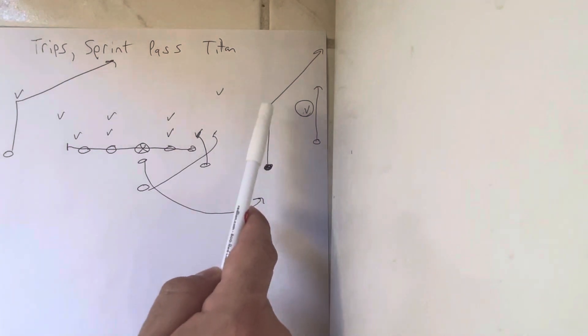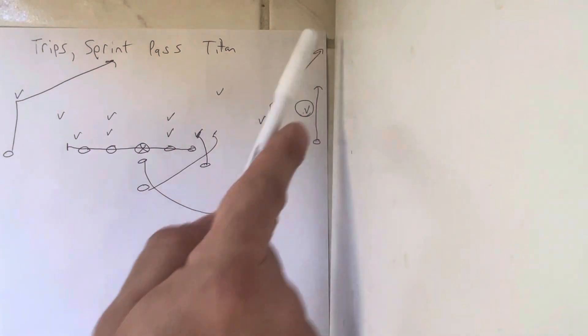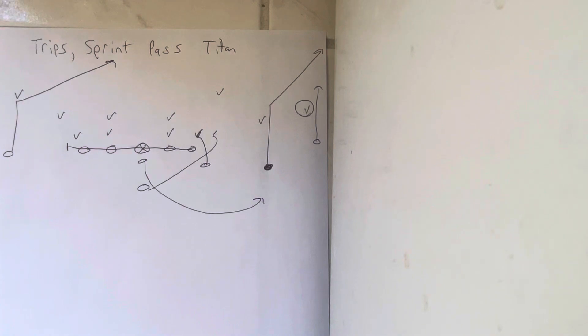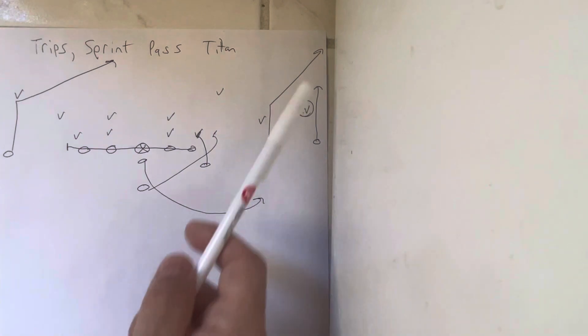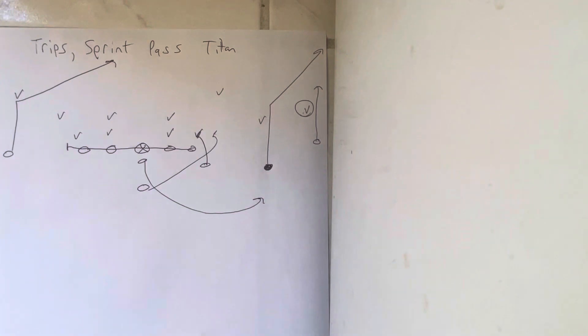The receiver is going to run 10 yards down the field and he's going to break it 45 on the corner route. That's where you want to throw the ball. You want to throw the corner route. If the corner gets over the top of that route, then you'd hit the stop.